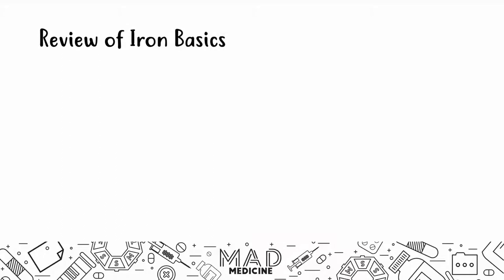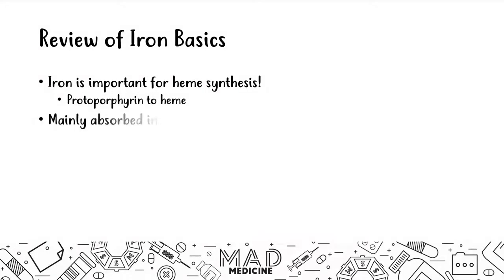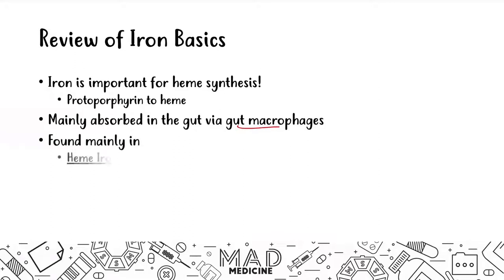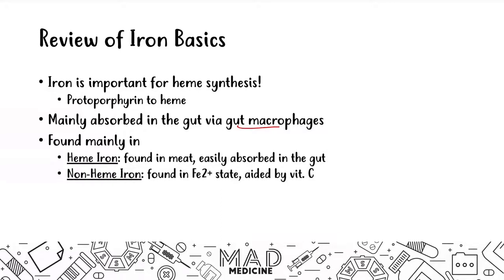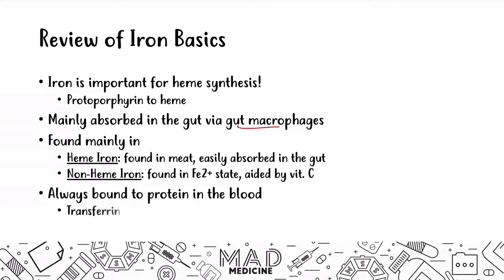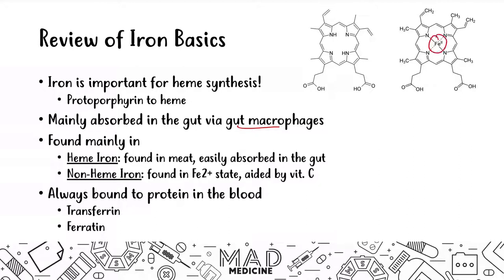When it comes to iron, you need to know a few things. Iron is very important for heme synthesis because it allows protoporphyrin to become heme via binding to protoporphyrin. It is mainly absorbed in the gut via gut macrophages and is found in two forms: heme iron, found in meat and easily absorbed, and non-heme iron, found in the Fe2+ state and aided by vitamin C. Iron is always bound to a protein in our blood to prevent free radical formation. When iron gets bound to protoporphyrin, it becomes heme, and that is why iron is so important. In late-stage iron deficiency anemia, you're going to present with decreased heme synthesis because you cannot carry out this step in your mitochondria.